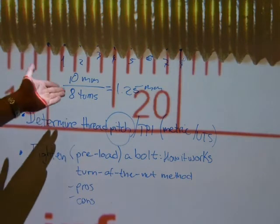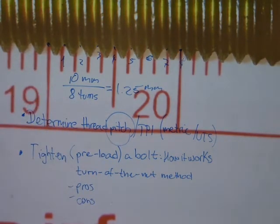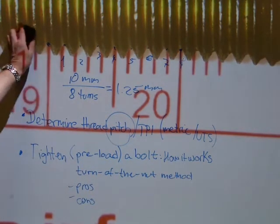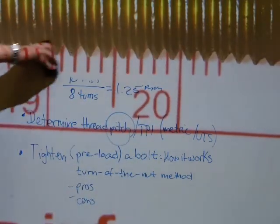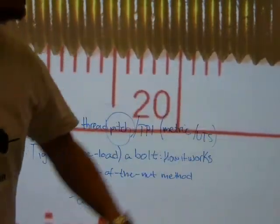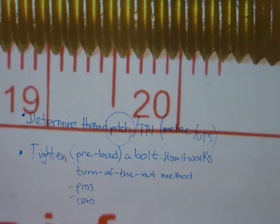And that gives us a pitch of 1.25 millimeters. So on this one, this is the pitch. Now, 1.25 millimeters. And on the previous one, it was 18 TPI. Now, how preloading and tightening works.